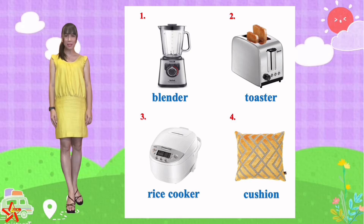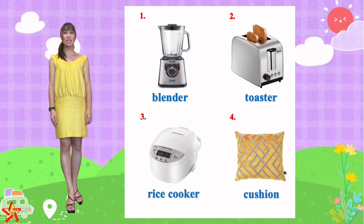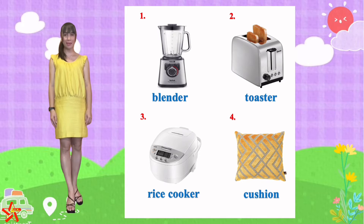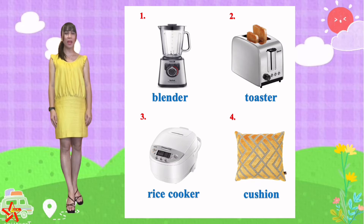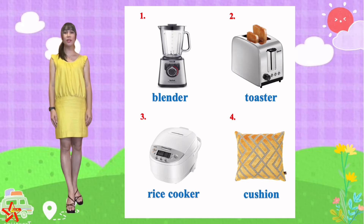And the last picture is cushion. C-U-S-H-I-O-N. Let me repeat all these words. We have blender, toaster, rice cooker, and cushion.